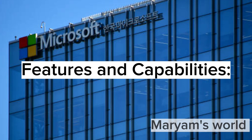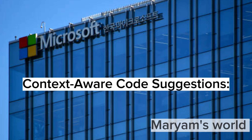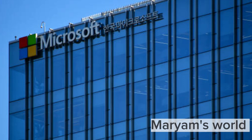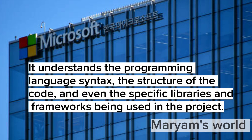Features and Capabilities. Context-Aware Code Suggestions: Copilot Pro uses advanced machine learning algorithms to analyze the context of the code being written and provides relevant suggestions accordingly. It understands the programming language syntax, the structure of the code, and even the specific libraries and frameworks being used in the project.